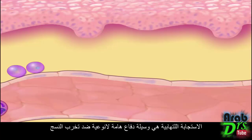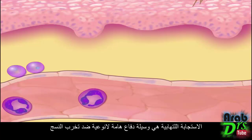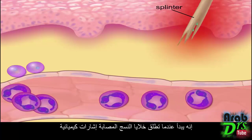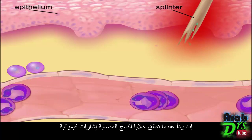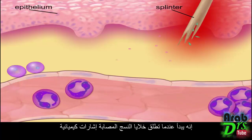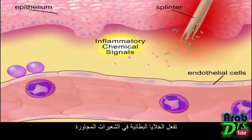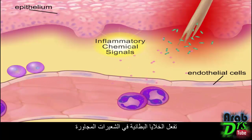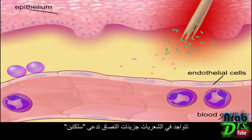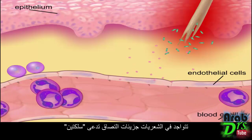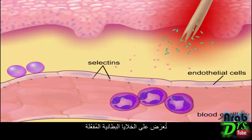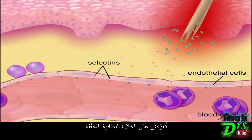The inflammatory response is an important nonspecific defense against tissue damage. It begins when injured tissue cells release chemical signals that activate the endothelial cells of nearby capillaries. Within the capillaries, adhesion molecules called selectins are displayed on the activated endothelial cells.